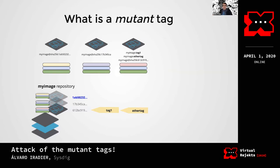I'll reuse the same digests for the rest of the talk if you don't mind - they are truncated for simplicity and laziness. As you can see in the example, we can use 'my-image@sha256:1ab...' to pull the first image, then 'my-image@sha256:...' to pull the second one, and either 'my-image:tag-one' or 'my-image@sha256:...' to pull the third one. Also worth noting: multiple tags can point to the same manifest. In the example you can see that 'my-image:tag-one' and 'my-image:other-tag' both refer to the same image at this point, although they could mutate independently.